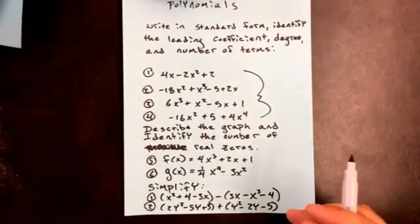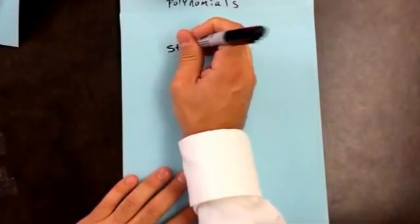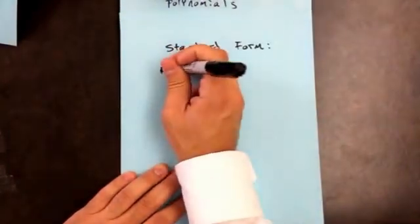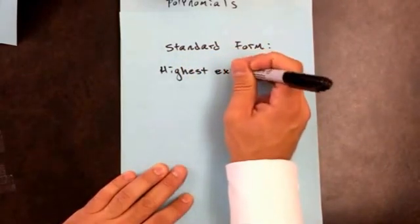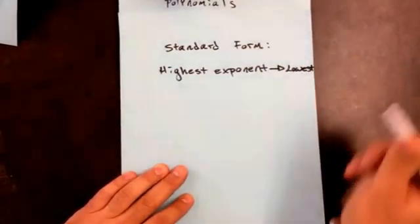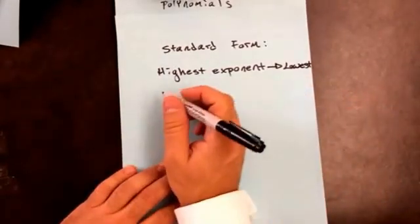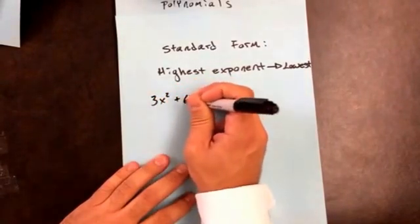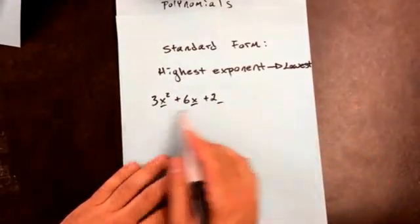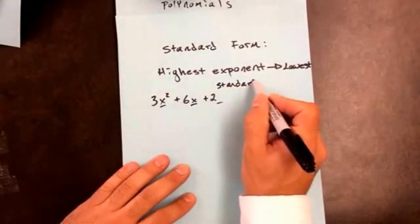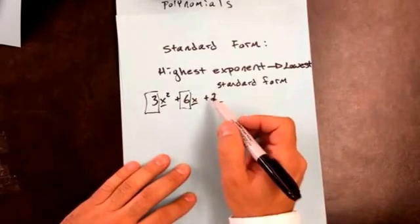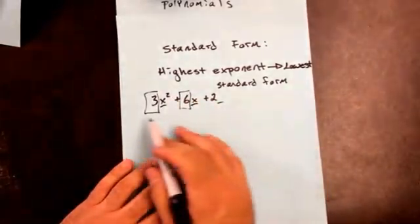The first thing — when we're trying to write in standard form, all that means is that you go from highest exponent to lowest exponent. You're not talking about the number in front of the variable with the exponent; you're talking about the actual exponent. So this has an exponent of 2, this has an exponent of 1, and there's no x here, so this is already in standard form. The coefficients don't matter — I'm just looking at the exponent: 2, 1, nothing. This is in standard form.